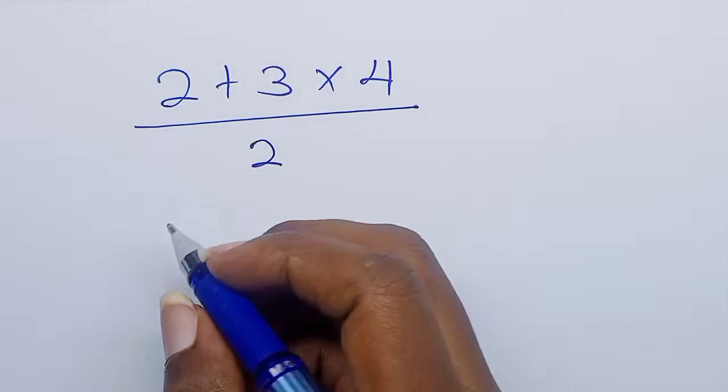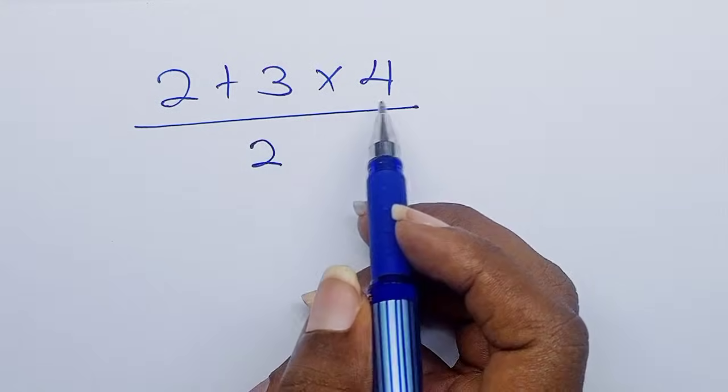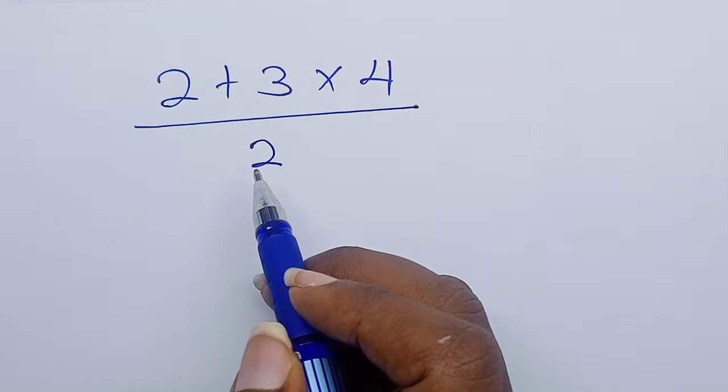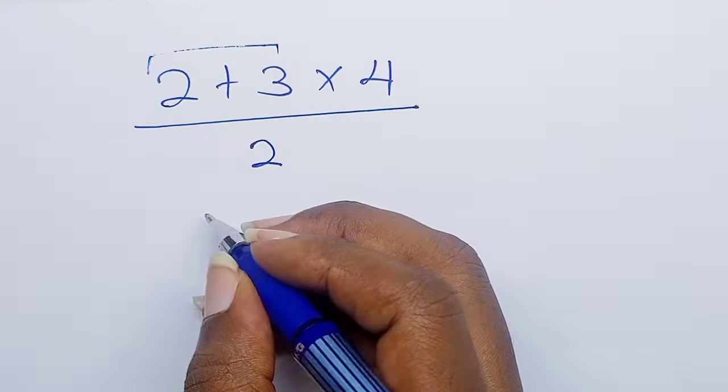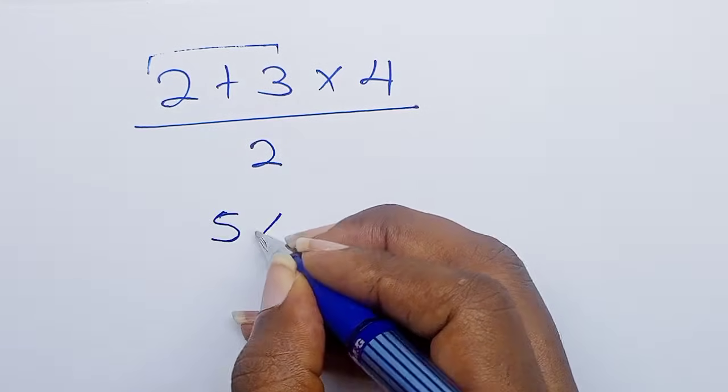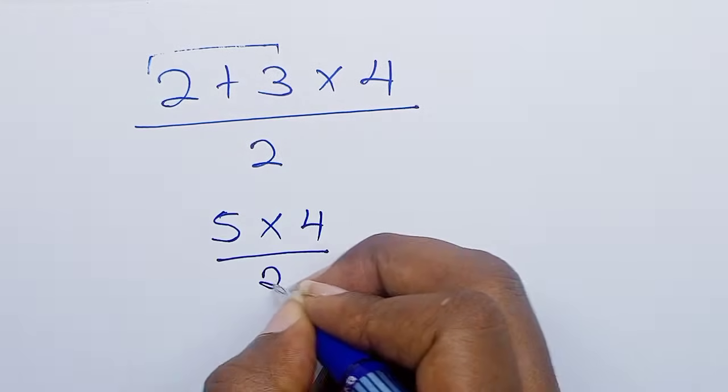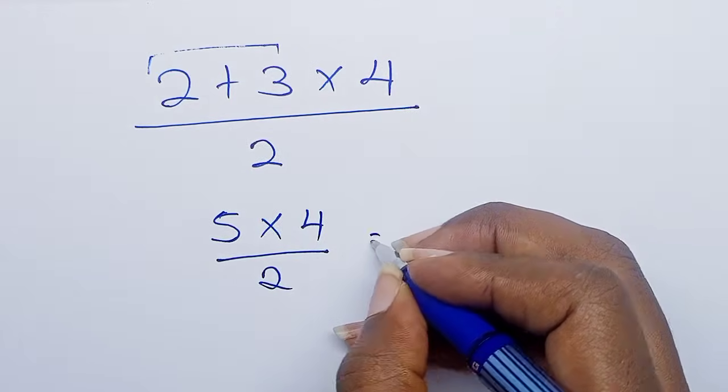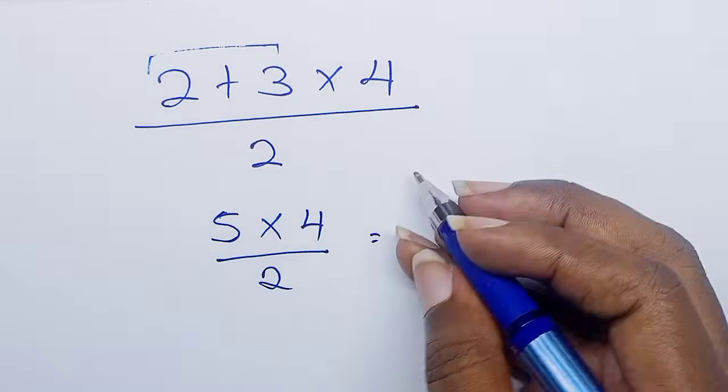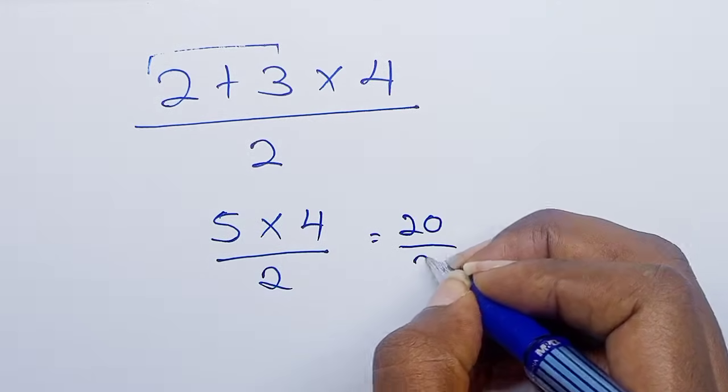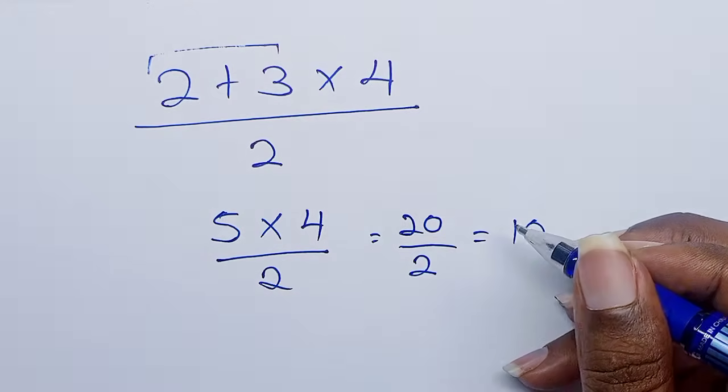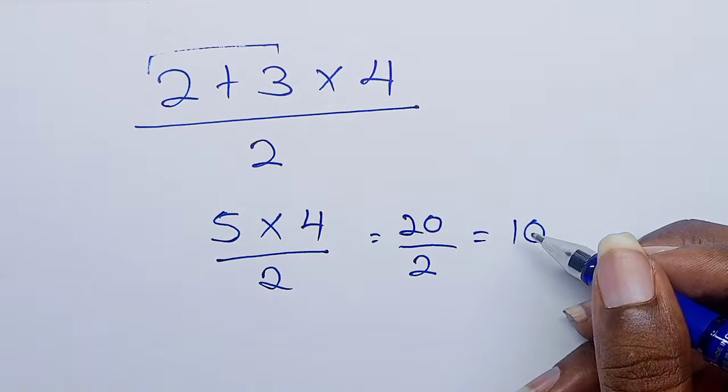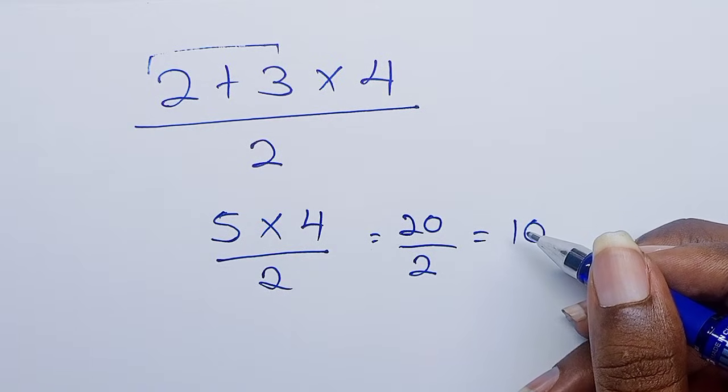Okay, so we have two plus three times four all divided by two. When you group two plus three, you get five. So five times four over two, which equals... five times four is twenty, so twenty divided by two equals ten. If you got your answer as ten, you are absolutely wrong.